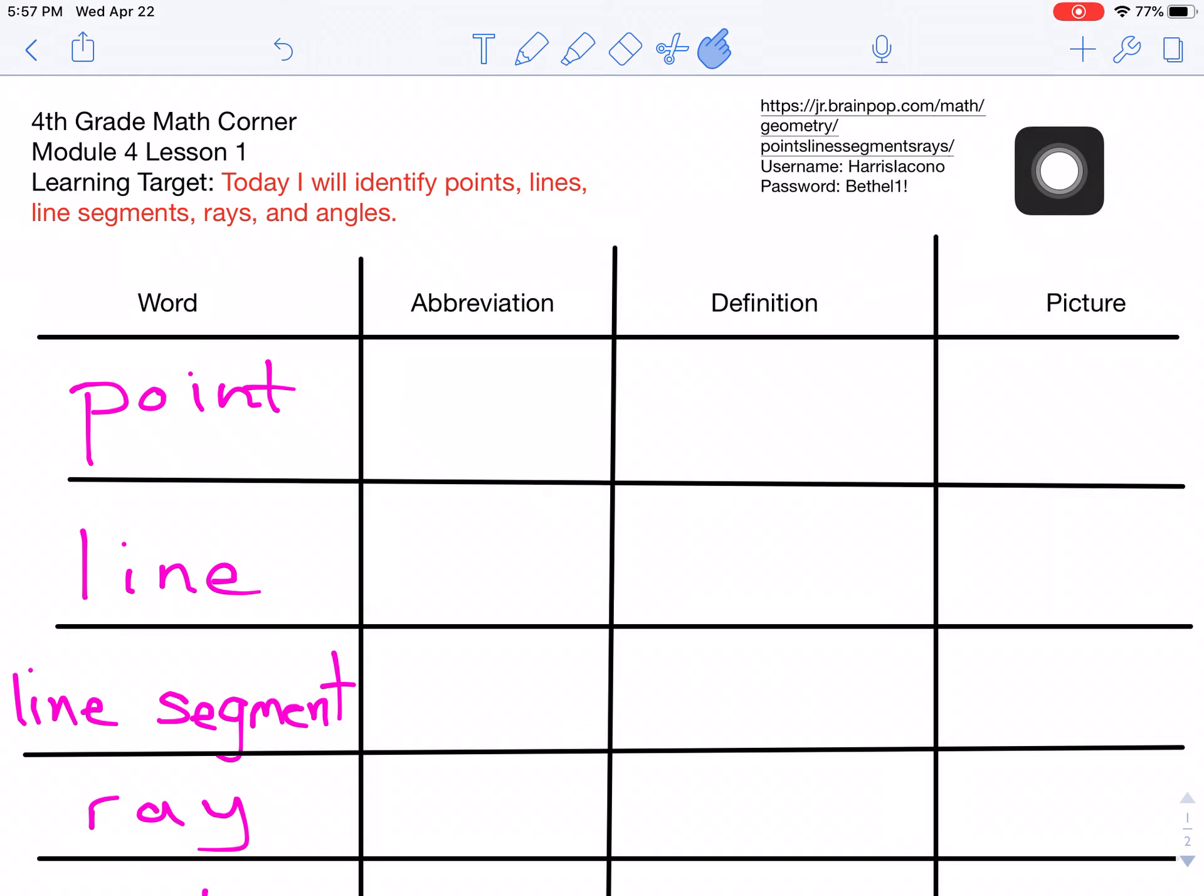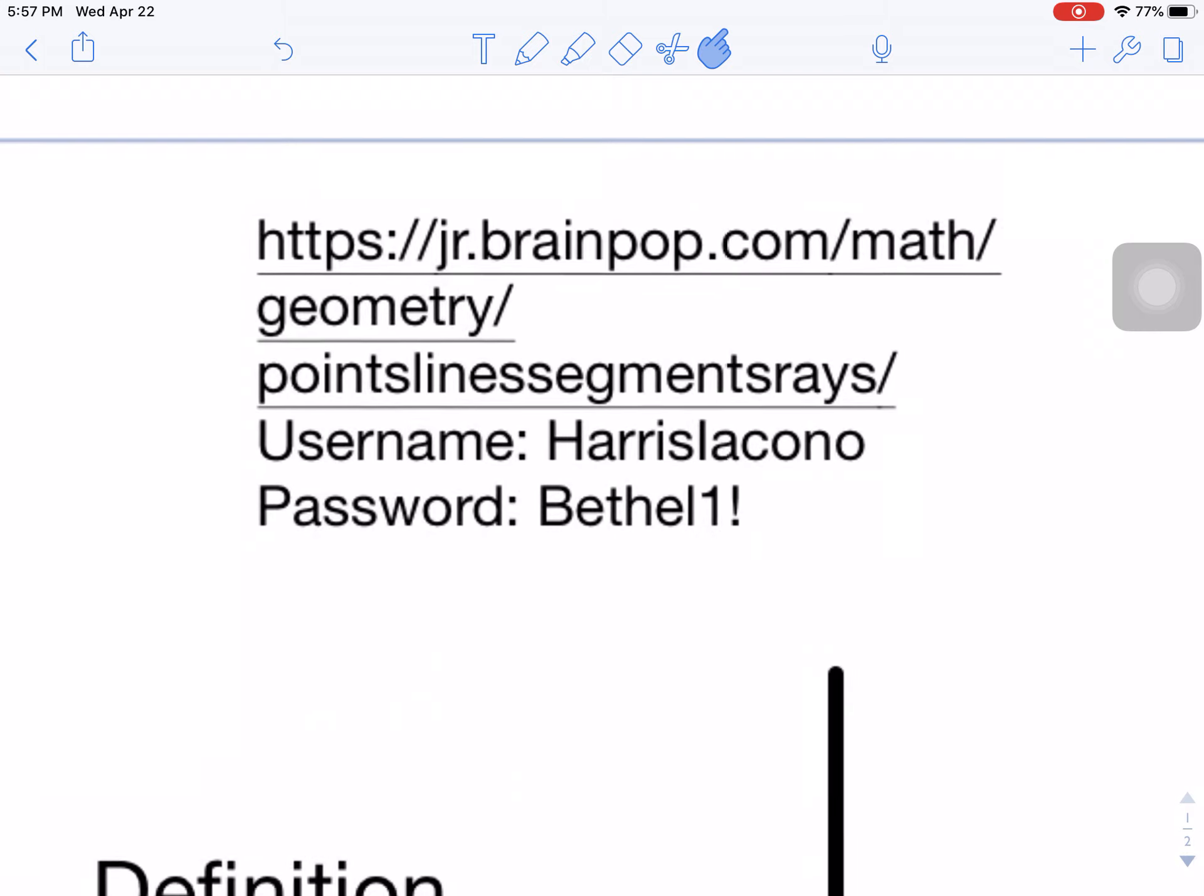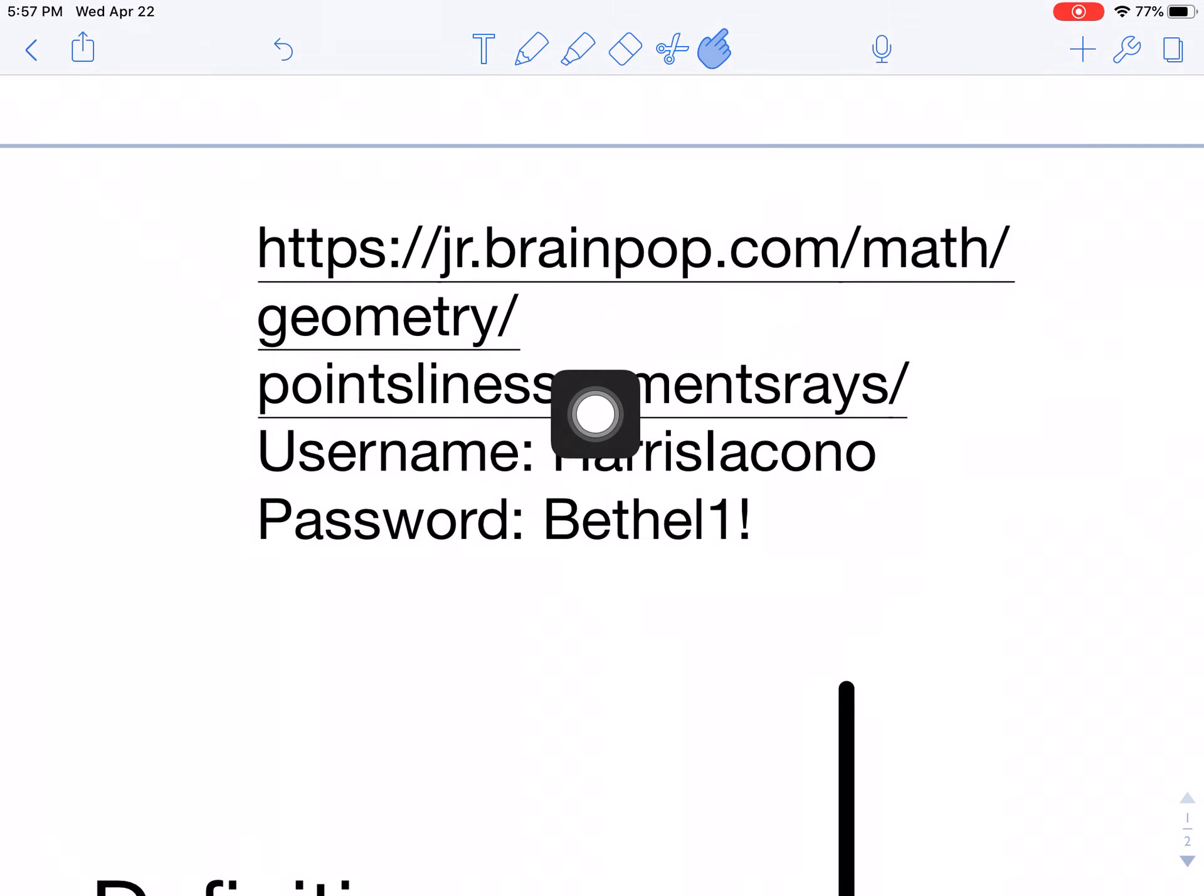On your calendar, it is suggested that you watch this Brain Pop video. That's very useful. Mrs. Iacono was awesome and has a username and password that everybody can use. When you go on to the Brain Pop, you are going to look in the Math section under Geometry for Points, Lines, Line Segments, and Rays. The username you will enter is Harris Iacono with a capital H and a capital I. And your password is Bethel 1 exclamation point with a capital B.